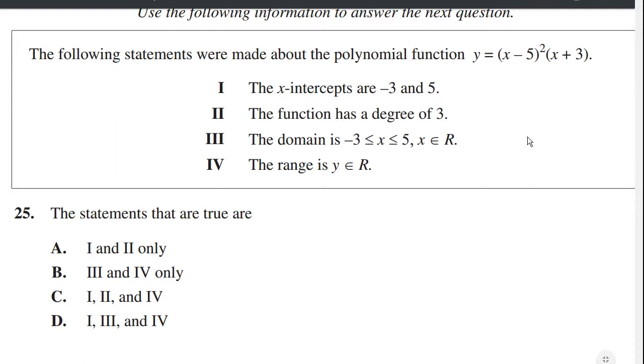The domain is negative 3 to 5. x is negative 3 to 5. Well, that's false. What we have here is the cubic function, the cubic curve. So the domain is any x. It's the entire real line. x is an element of the real. So this is wrong, this part here. So 3 is out.